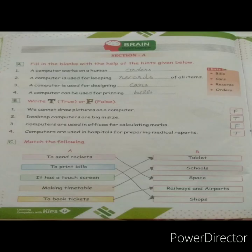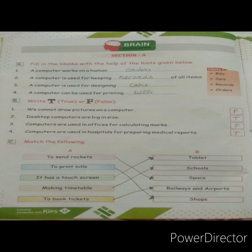Now we start first Section A, Question A: Fill in the blanks with the help of hints given below. First one — computer works on human orders. When a human gives an order, the computer works on it. So the first answer is 'orders'.